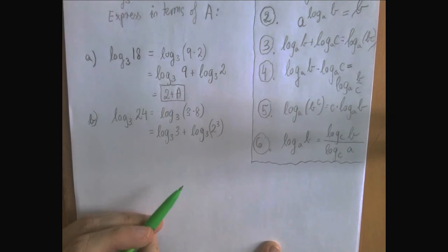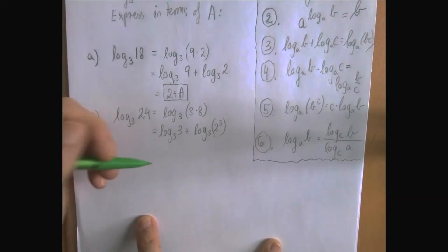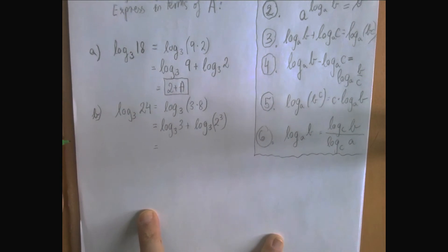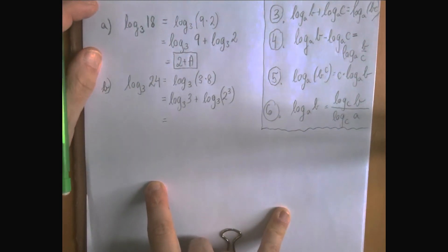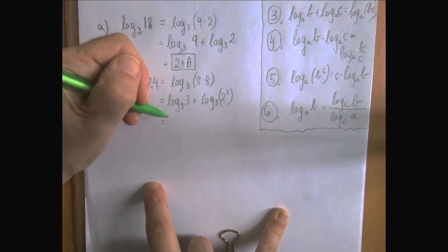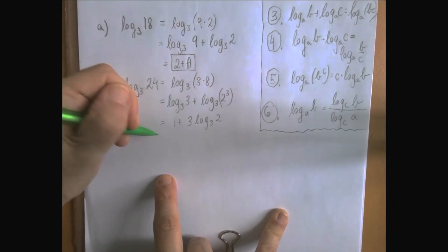Log 3 of 3 is 1. Now what about log 3 of 8? 8 is 2 to the 3rd power. So by the 5th rule, log 3 of 8 is log 3 of 2 to the 3rd power, which is 3 times log 3 of 2 or 3a.